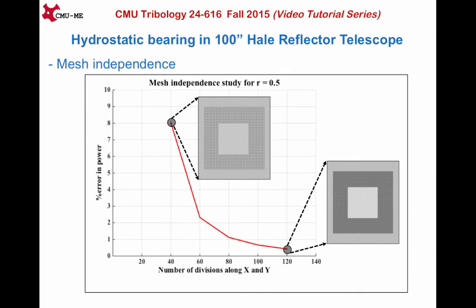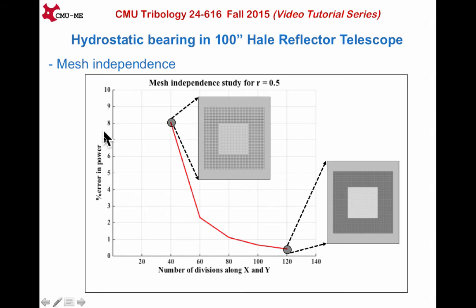To ensure that the results obtained from the flow chart are reliable, we need to perform what is known as a mesh independence study. This means that the solutions should be independent of the mesh resolution. To achieve this, we have successively increased the mesh resolution plotted on the x-axis. The error in the power value for a particular mesh with respect to a level-up coarser mesh, compared to the power of the most refined mesh, is expressed as a percent value on the y-axis. The error goes down with increasing mesh density. The image corresponds to a 40×40 grid and another to a 120×120 grid. The error for the 120×120 mesh is less than 0.5% and is within acceptable numerical tolerance. All remaining simulations are carried out using a mesh density of 120×120.